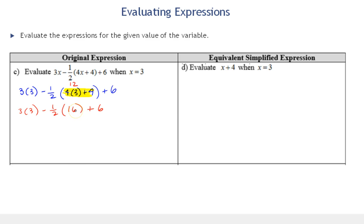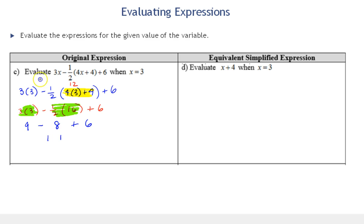We have multiplication, subtraction, multiplication, and addition — we need to do multiplication first. There are two multiplications; I'll perform them left to right. 3 times 3 is 9, and one-half times 16 is 8. Now we have subtraction and addition, so we work left to right: 9 minus 8 is 1, and 1 plus 6 is 7. After this video I'll make a brief video showing how to check these on your calculator.